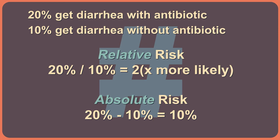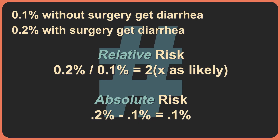Let's make up an example. Let's say that 20% of people who take a certain antibiotic develop bad diarrhea. In the same study, 10% of those who didn't take the drug develop diarrhea too. If you go with a relative risk, then the drug doubled your chance of having diarrhea. If you go with an absolute risk, then the drug increased your risk of diarrhea from 10% to 20%, so your absolute risk went up by 20 minus 10, or 10%.